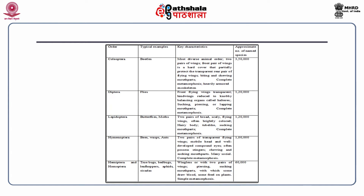Order Coleoptera: key characteristics include that this is the most diverse animal order, with two pairs of wings. The front pair of wings is a hard cover that partially protects the transparent rear pair of flying wings. Biting and chewing mouthparts, complete metamorphosis, and a heavily armed exoskeleton.